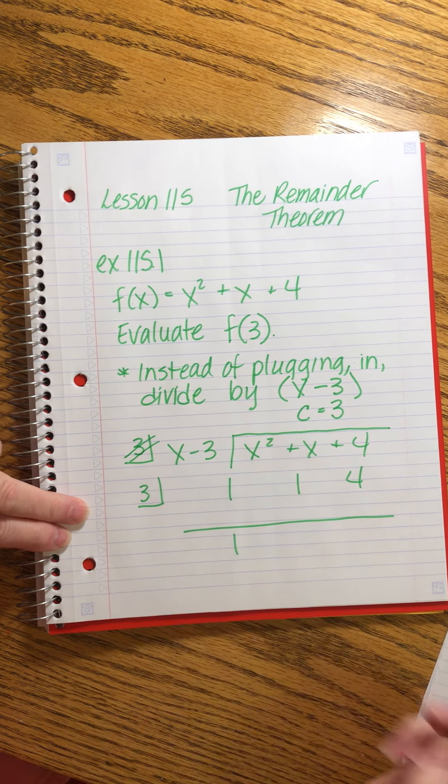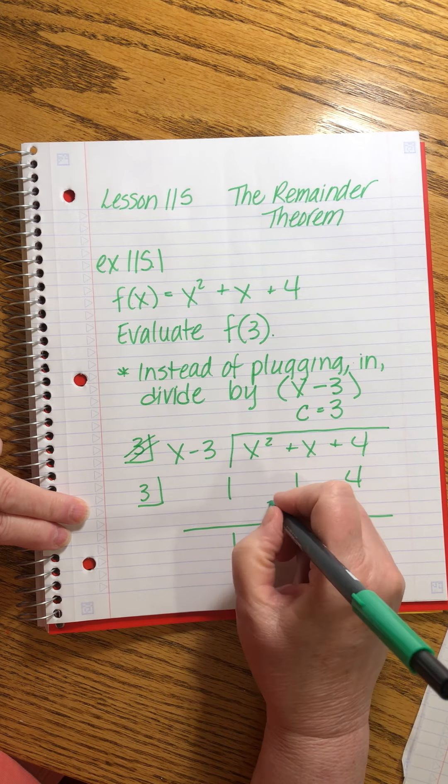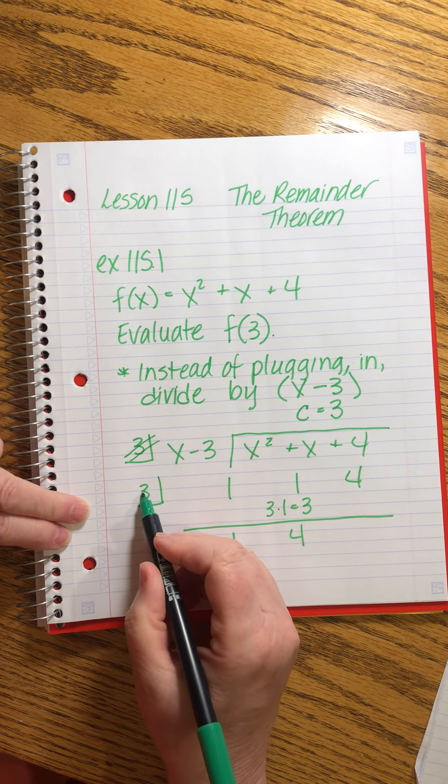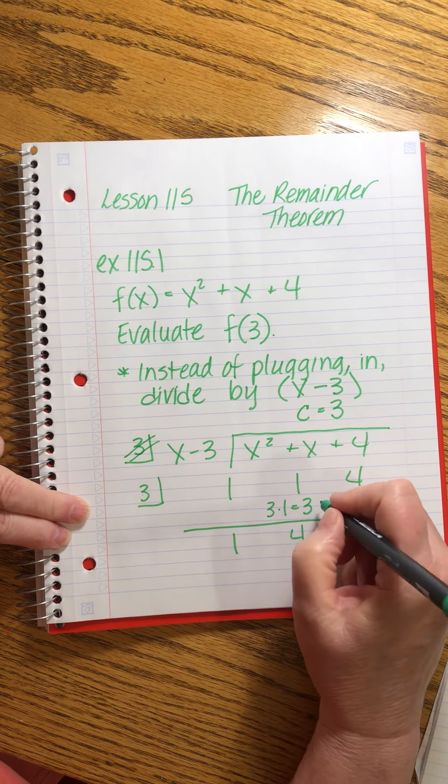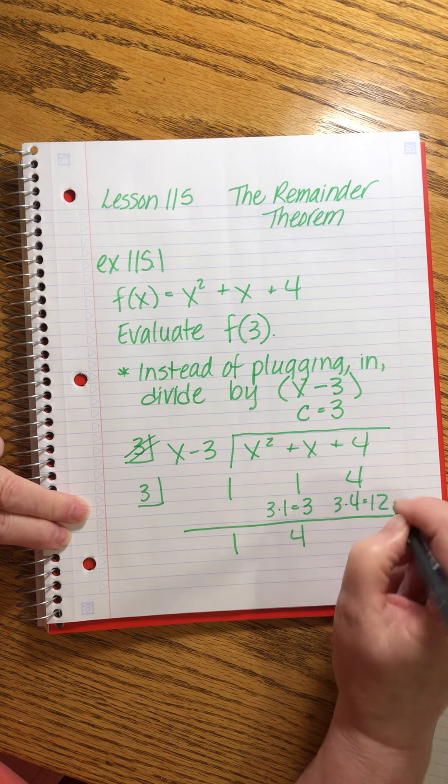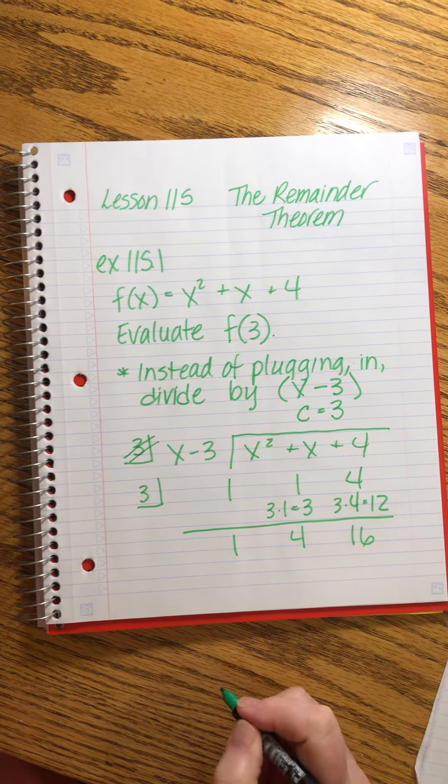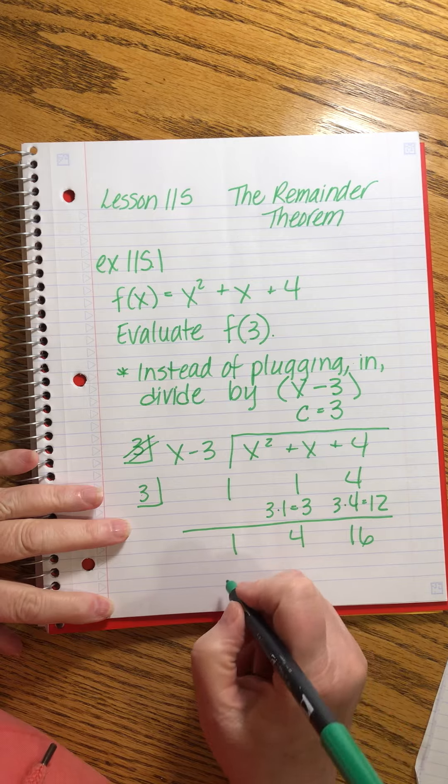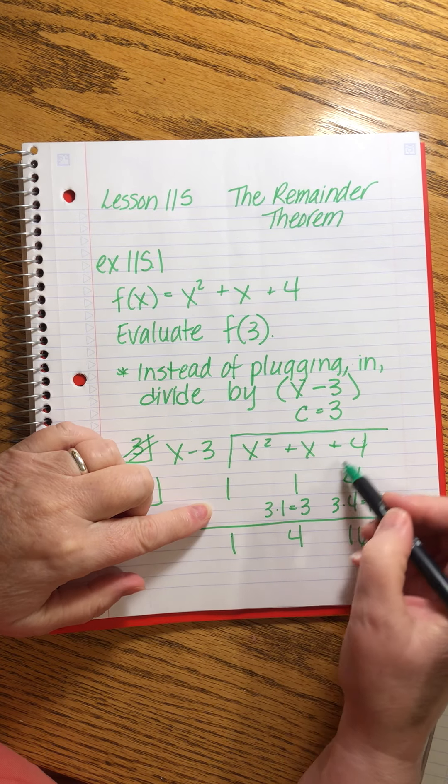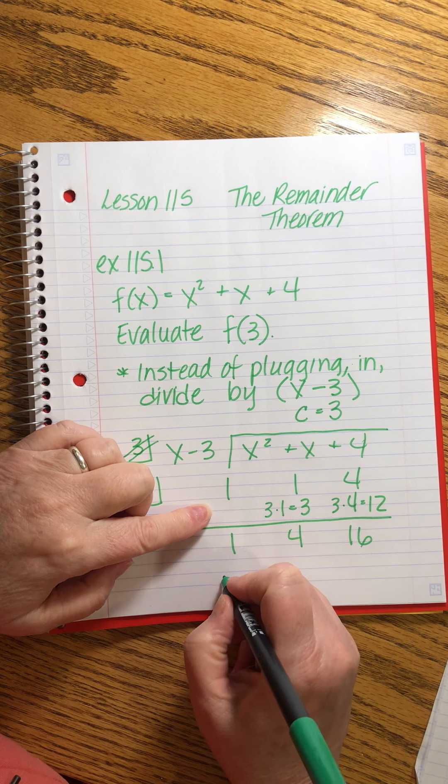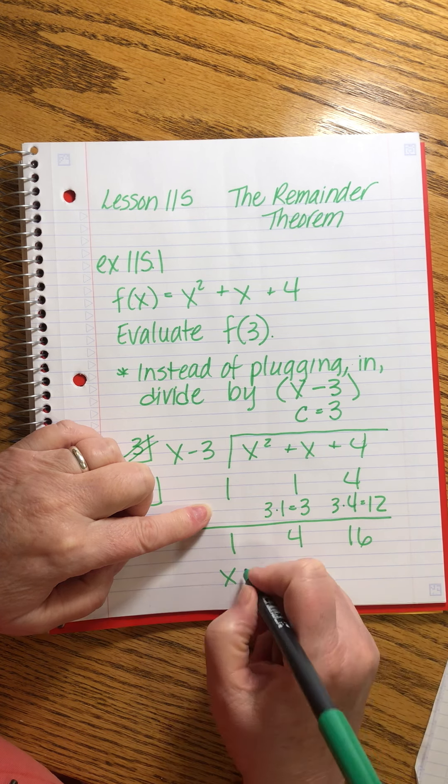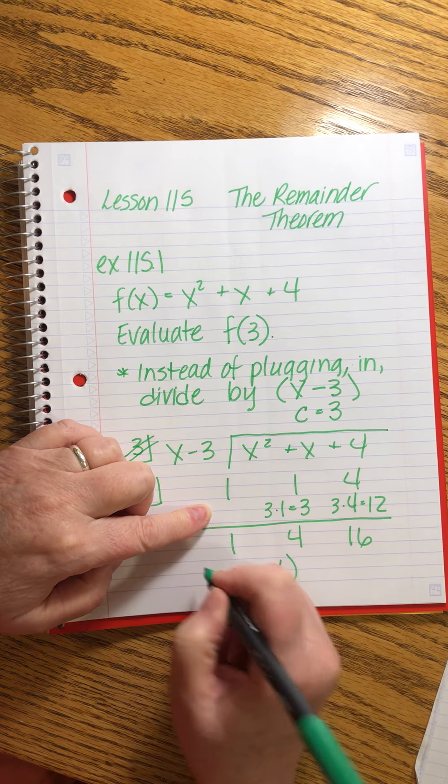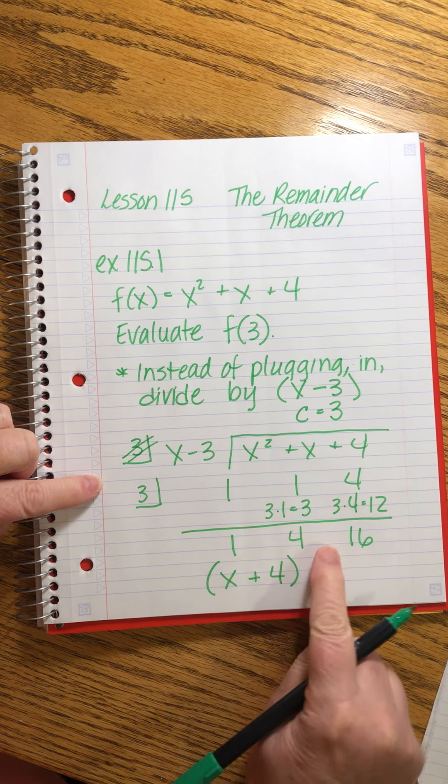Now we do our calculation. We bring down the 1, then we multiply 3 times 1 and we write it here. We add these. Beautiful. Now we multiply 3 times 4, that's 12, and we add these. That's 16. So now we know that this answer, remember we have to adjust like so, it's going to be 1x, or just x, plus 4.